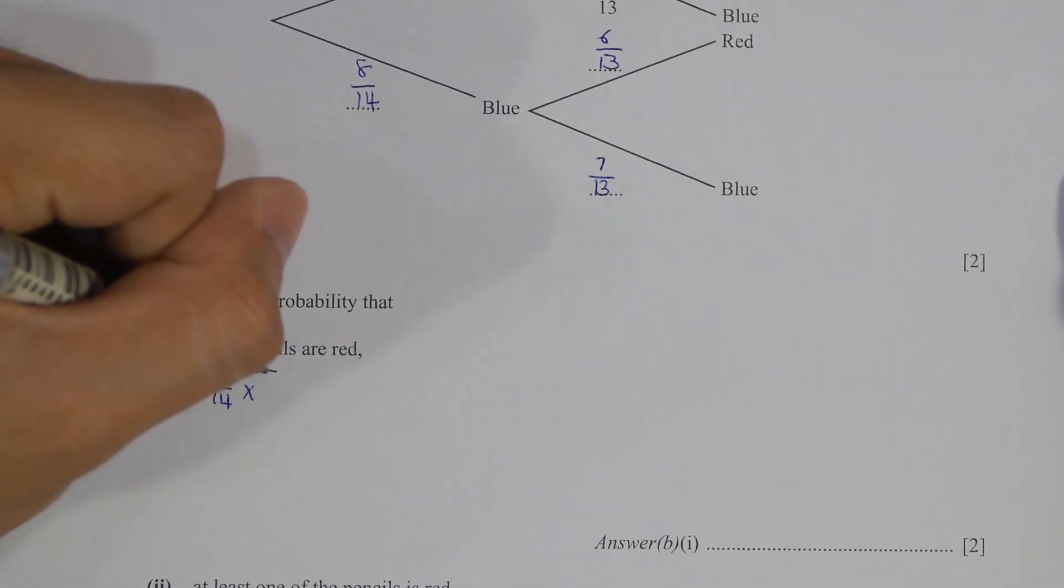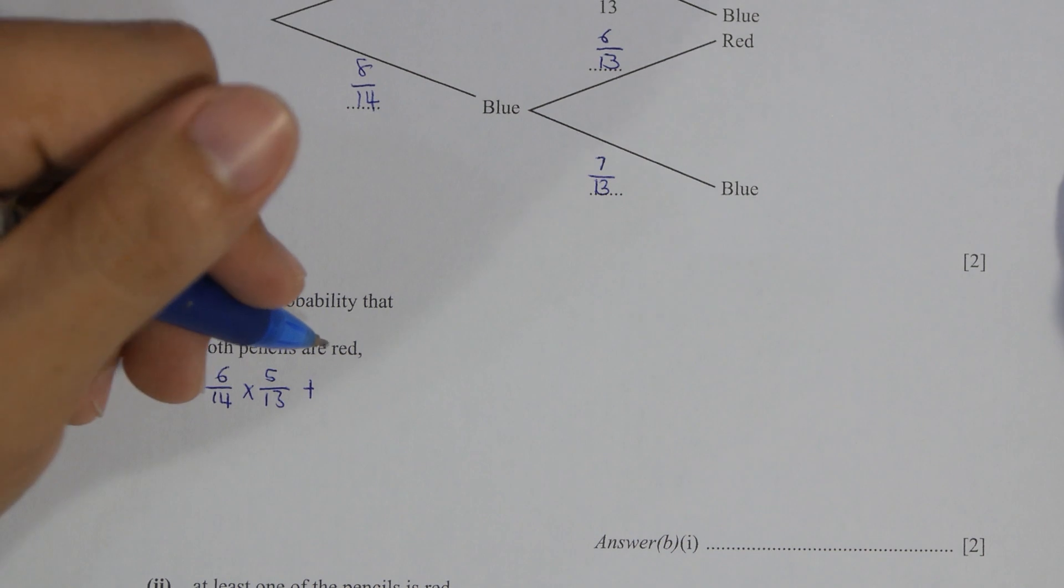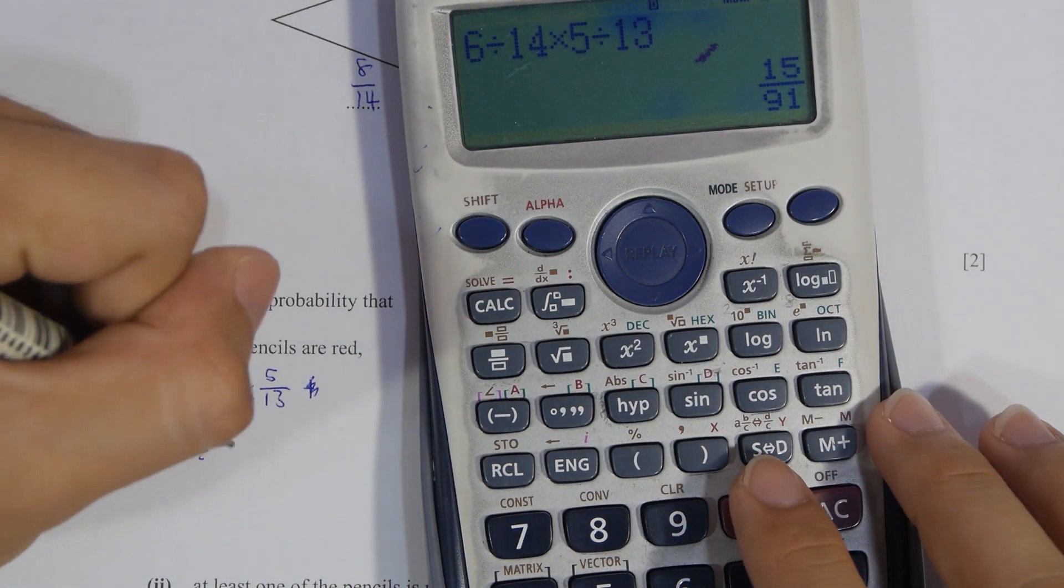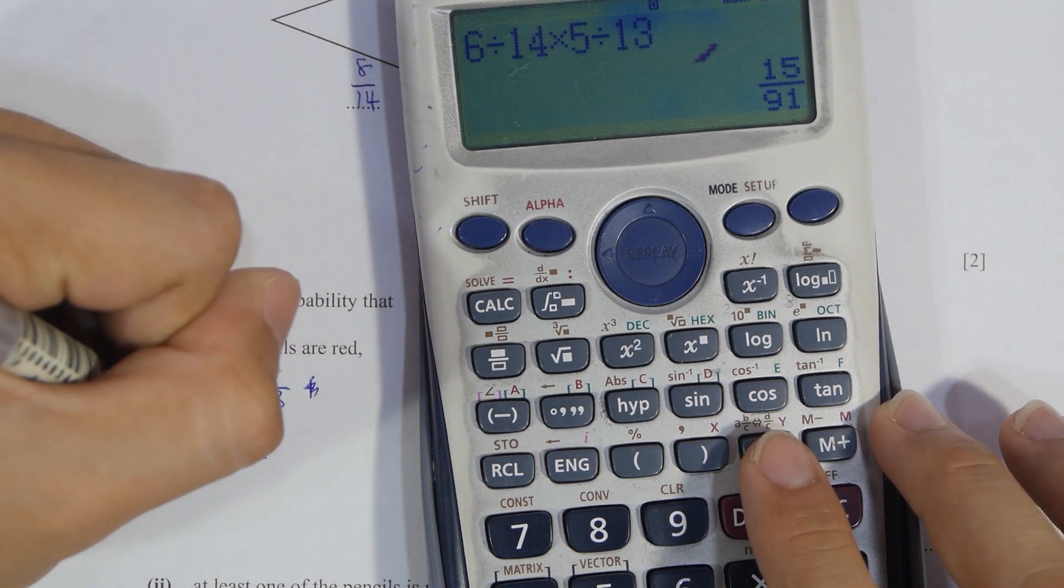So part B, number 1, calculate both pencils are red. So 6 over 14 times 5 over 13, then you get 15 over 91.